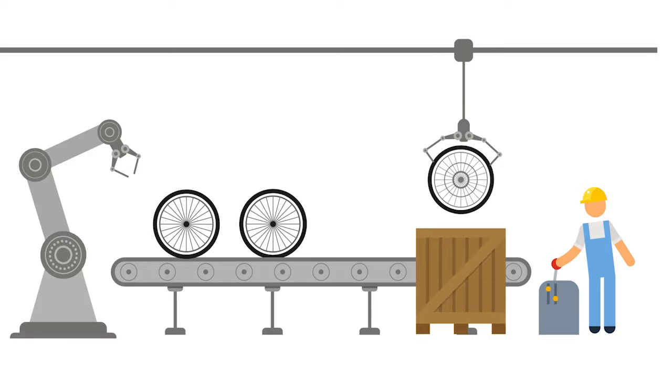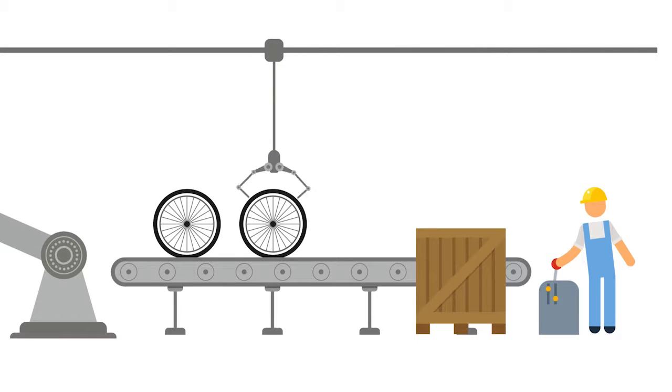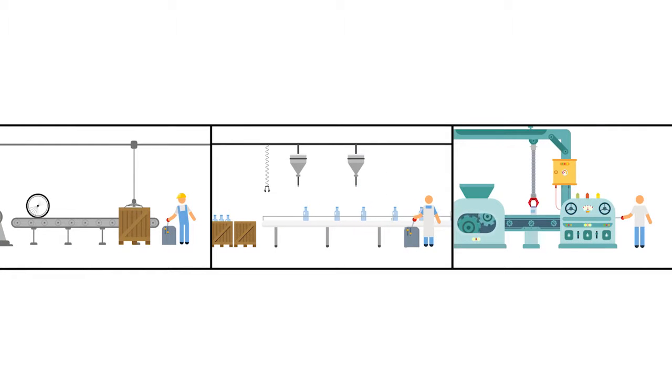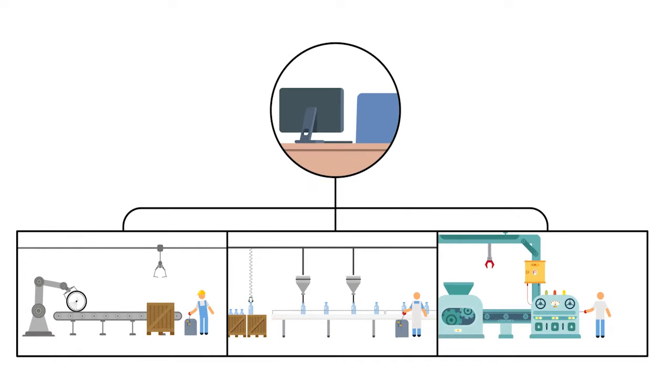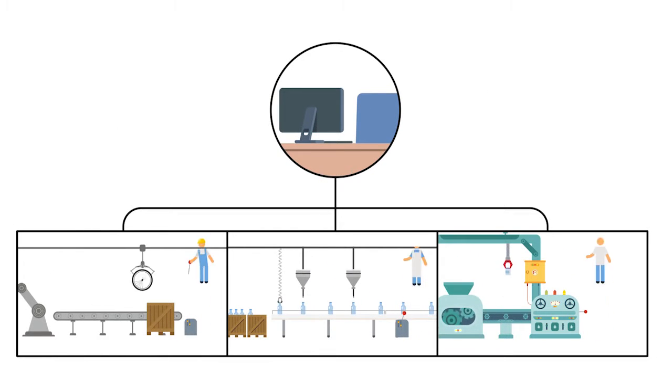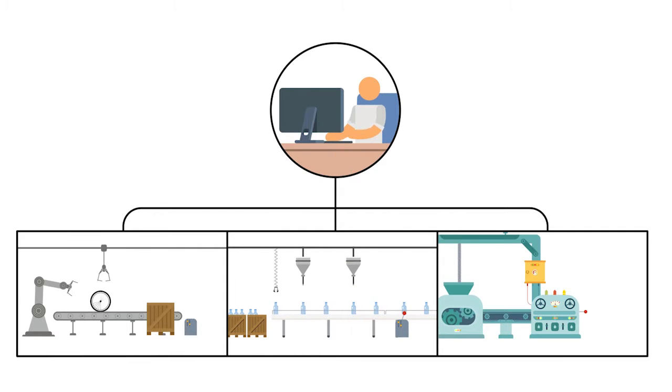The productivity of each worker was increased drastically because it was now a function of the productivity of the machine that he operated. And when we developed a machine that could compute data and run other machines, each worker's productivity increased even more.